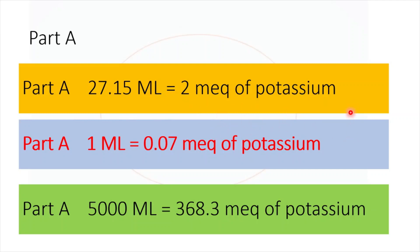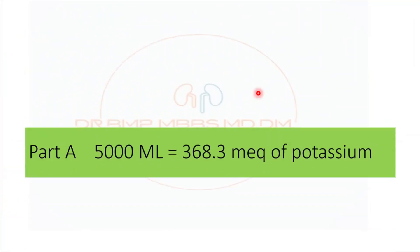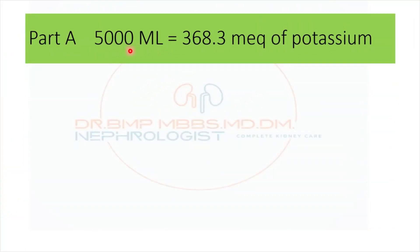There is usually mild confusion about how this ratio works. The 27.15 ml of Part A contributing to 1000 ml of dialysate delivers 2 milliequivalents. One ml contains 0.07 milliequivalents of potassium, so in the 5-liter can there are 368 milliequivalents. This amount in the can delivers 2 milliequivalents in the final dialysate.